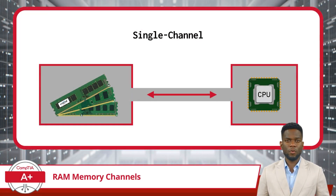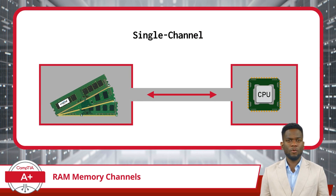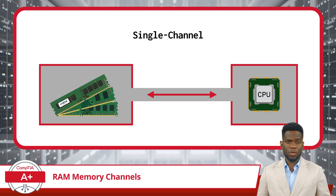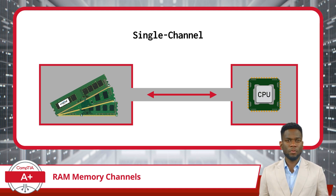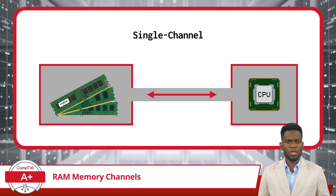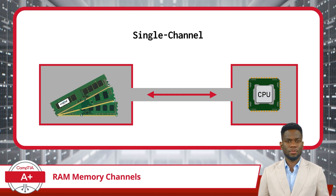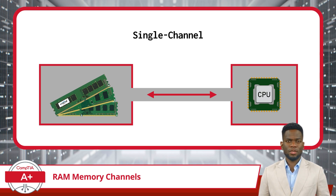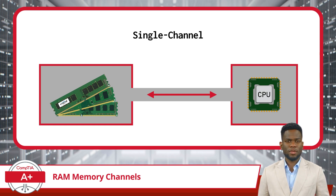Let's break down the different RAM memory channel configurations based on the number of channels. In a standard single-channel configuration, data travels along a single pathway between the CPU and RAM, much like a single-lane road. While the setup is functional, it can sometimes lead to bottlenecks, especially when the CPU demands a high volume of data. You can recognize a single-channel configuration by observing that only one RAM module is installed, or if multiple modules are present, they will not be installed with any significant pairing.